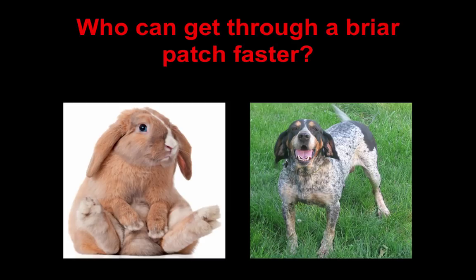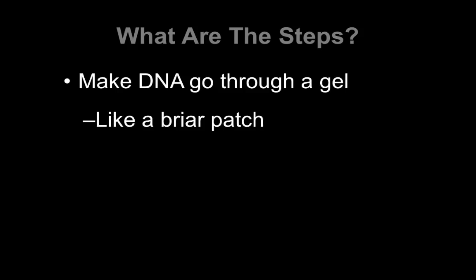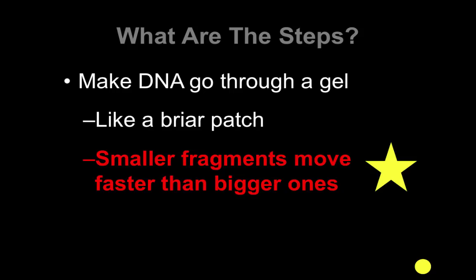Before we look at the next step, consider: which goes through a briar patch faster — this rabbit or the dog? The answer is clearly the rabbit, because the rabbit is so much smaller. In a maze-like situation, the rabbit is able to weave in and out of the briars much quicker than the dog, so it gets farther faster. Keep that in mind, because we're going to make our DNA go through a gel that is very much like a briar patch. The DNA fragments are forced to weave through this gel, which means the smaller fragments are going to move faster — and therefore farther — than the bigger ones.